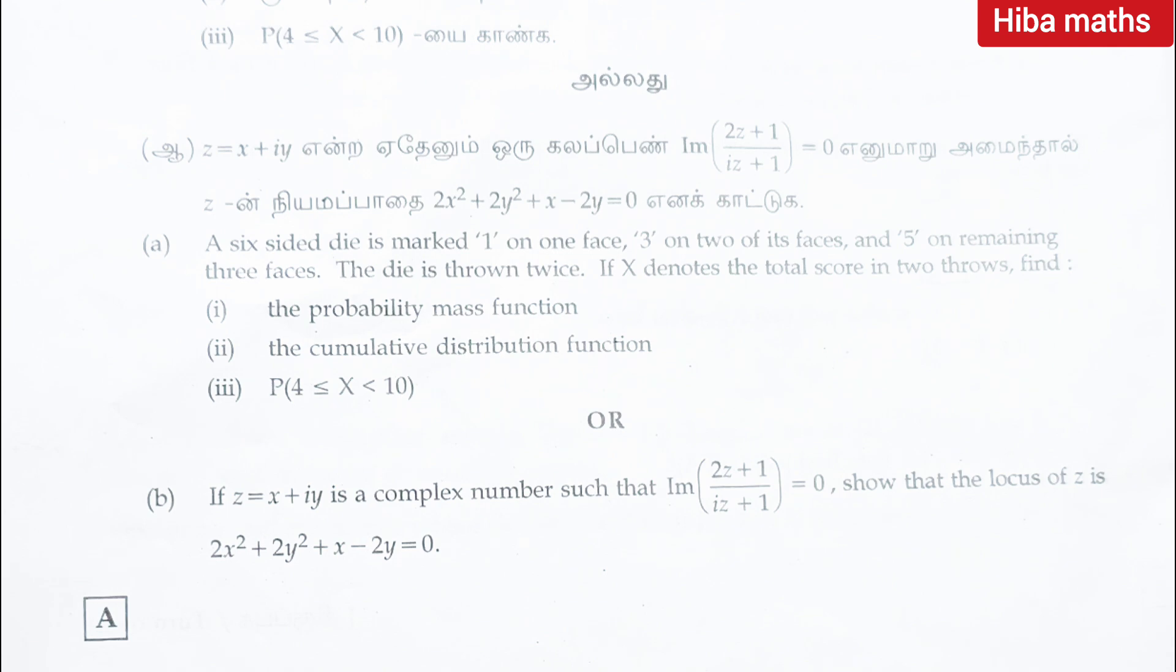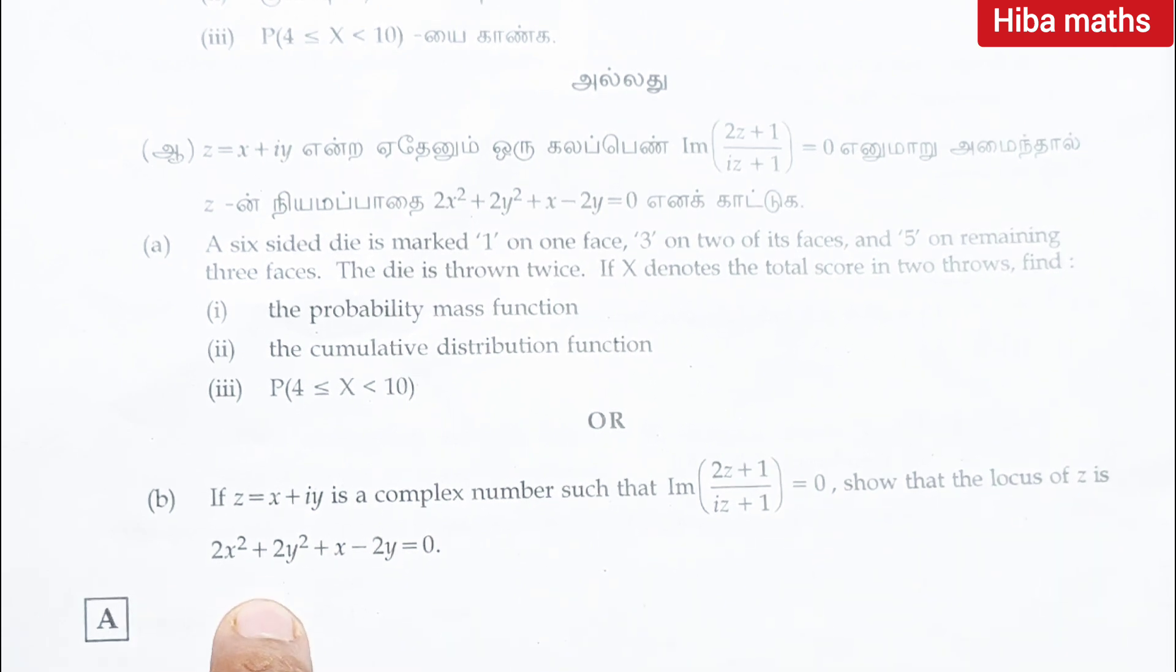Or if z is equal to x plus i y is a complex number such that imaginary term of 2z plus 1 by iz plus 1 is equal to 0, show that the locus of z is 2x square plus 2y square plus x minus 2y is equal to 0.